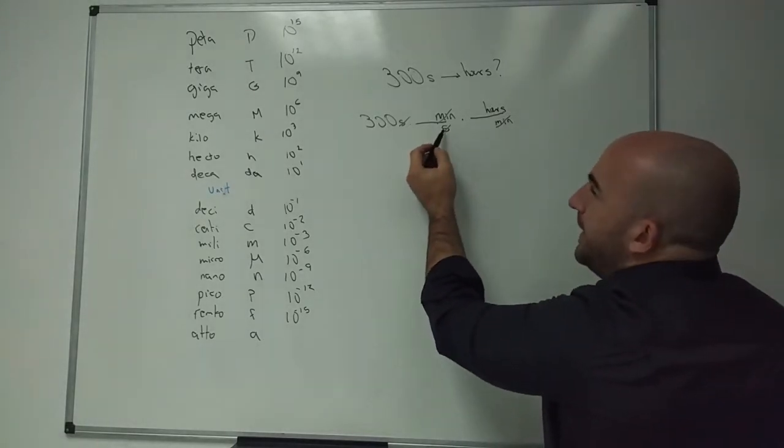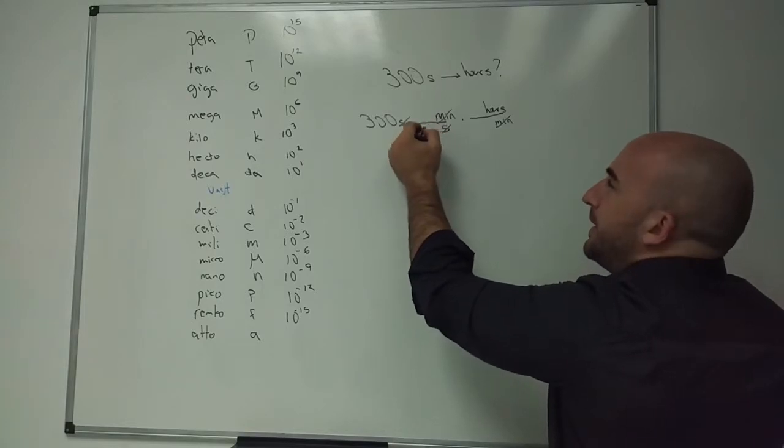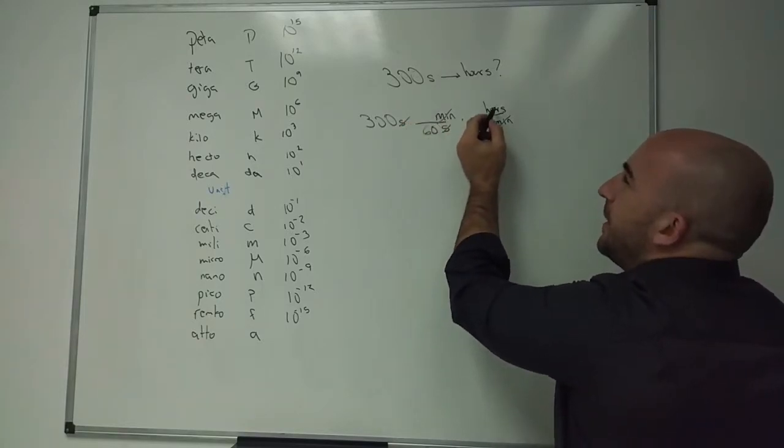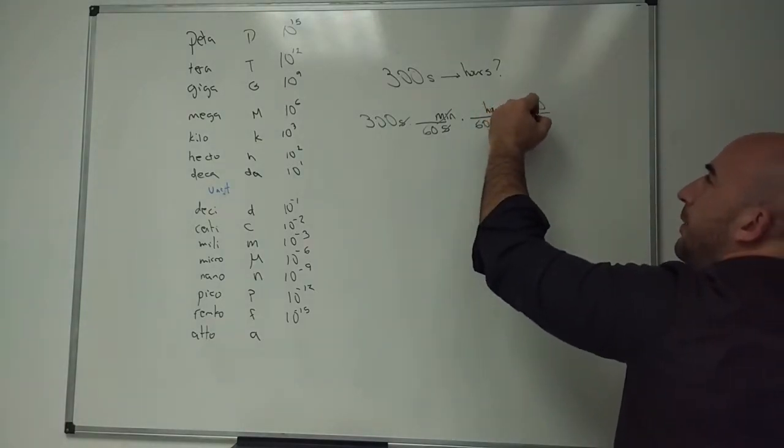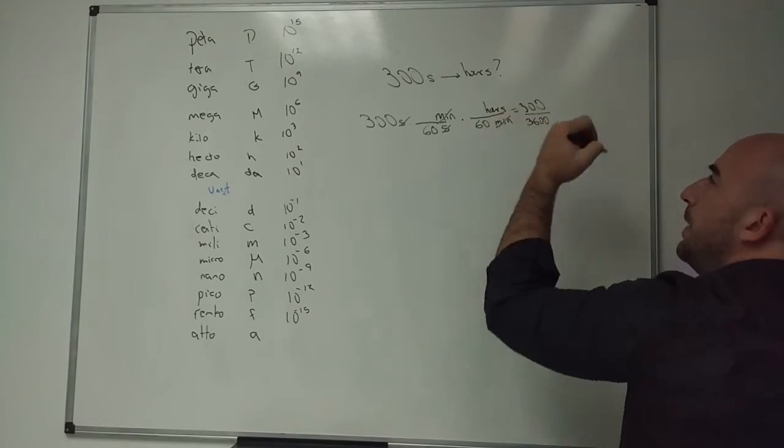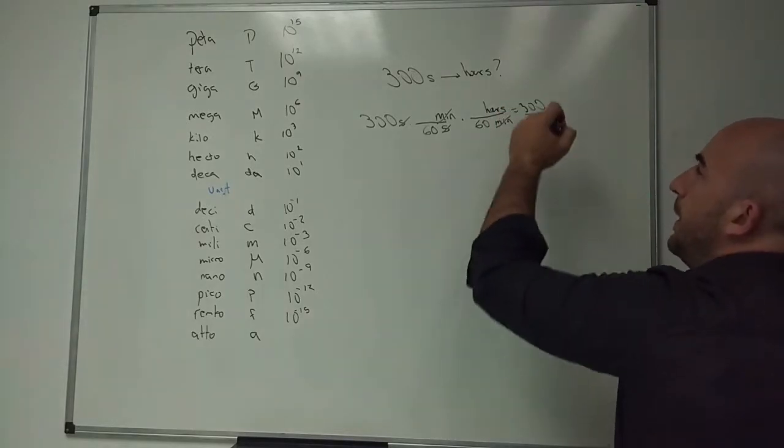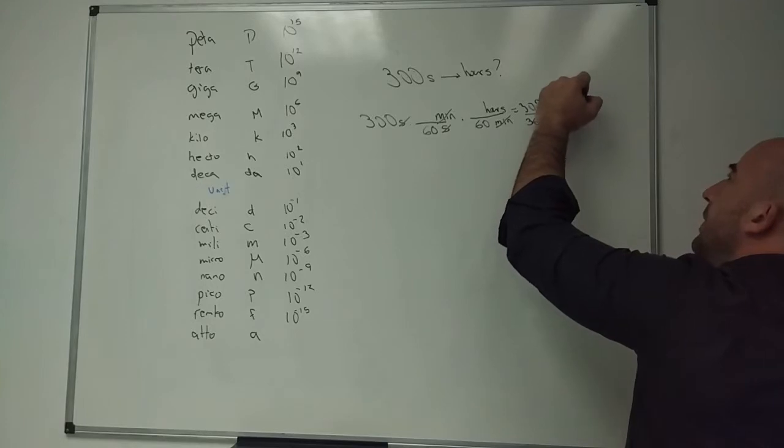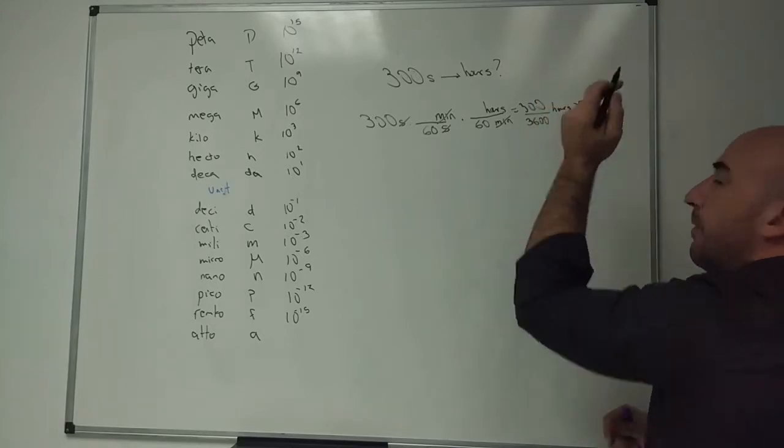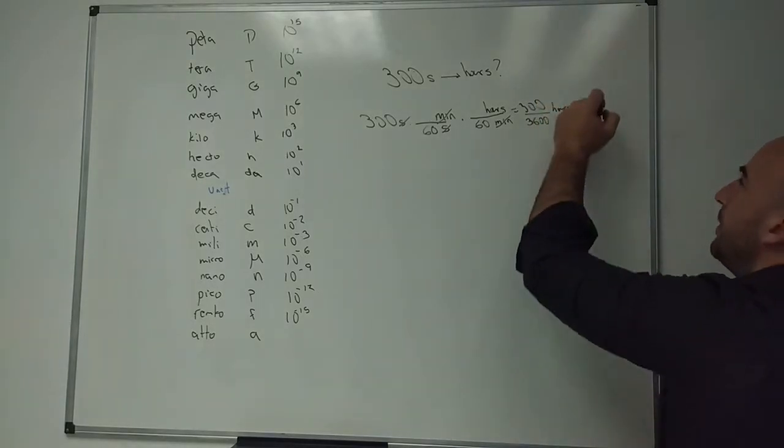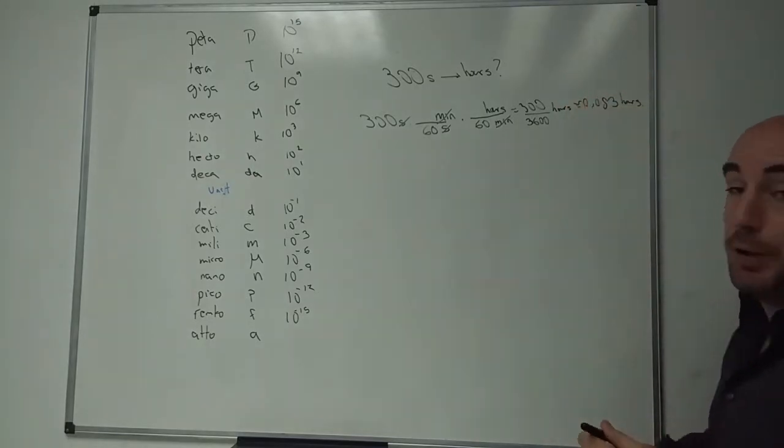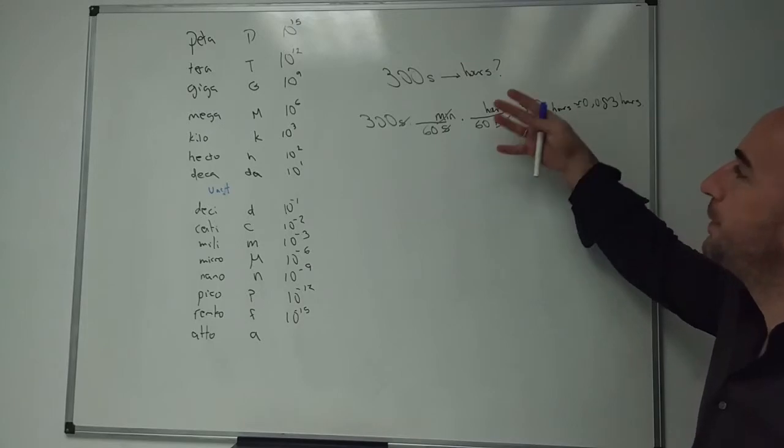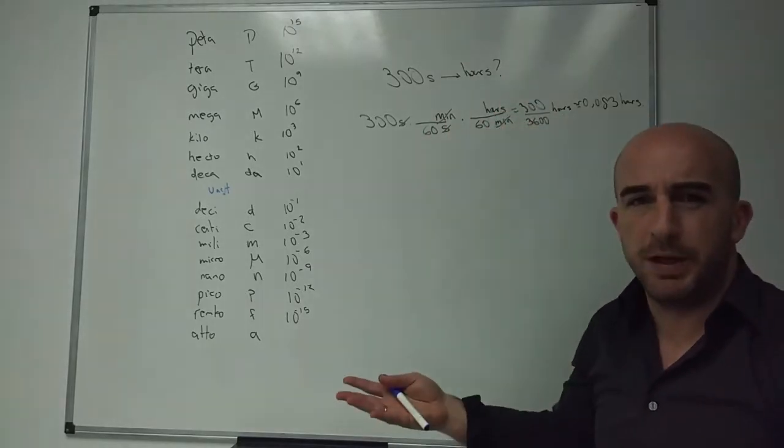So now I have to put the factor that changes from one unit to the other. And that's easy. How many seconds are there in a minute? 60. How many minutes are there in an hour? 60. So that's 300 divided by 3600, which is 0.83 hours. But the good way is that you don't have to remember, should I divide, should I multiply. You don't need it.